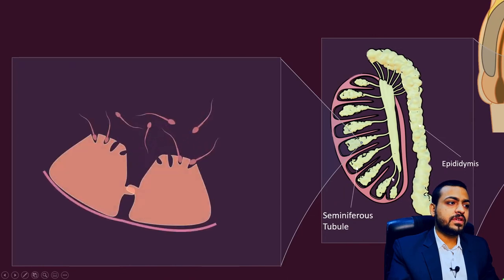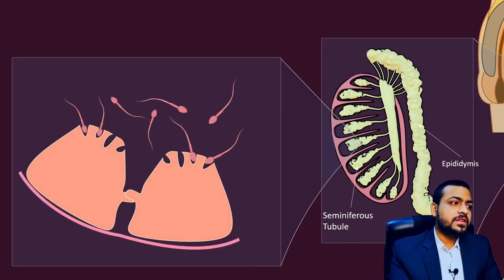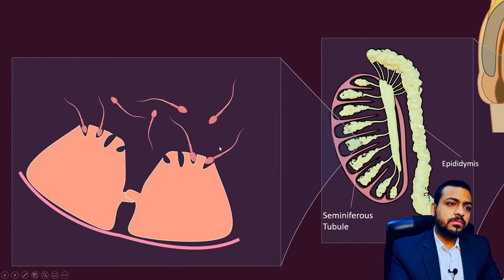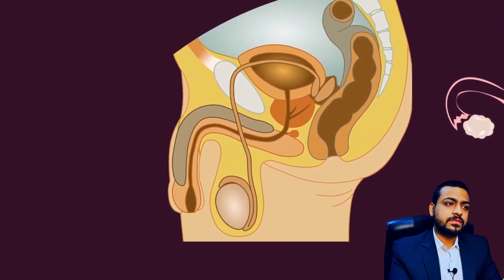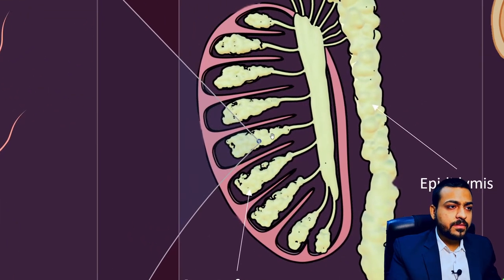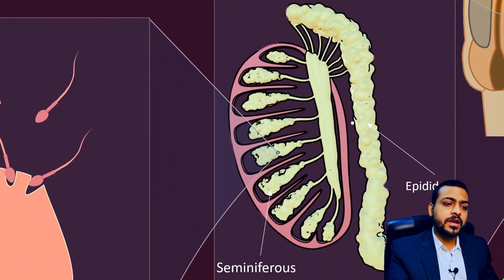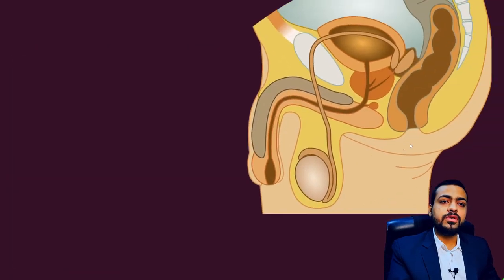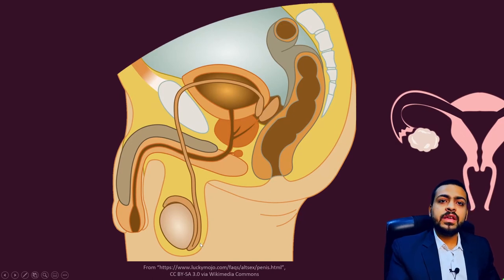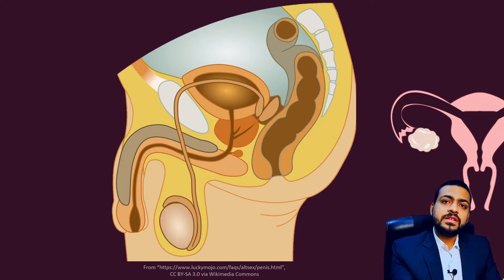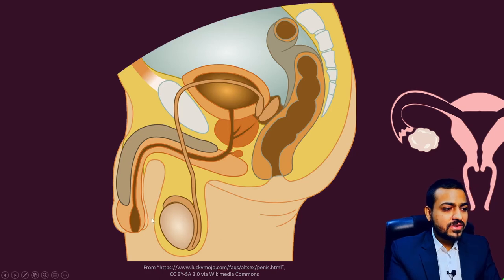In the seminiferous tubules of testes there are special cells called Sertoli cells, and these sperms develop in the furrows of Sertoli cells. As they mature, they come out of the furrow into the lumen of the seminiferous tubules. They then come into the epididymis, where the sperms further mature and become motile. Certain changes occur in the sperm — the sperms get mature in the epididymis.